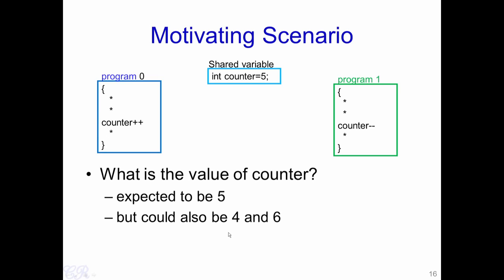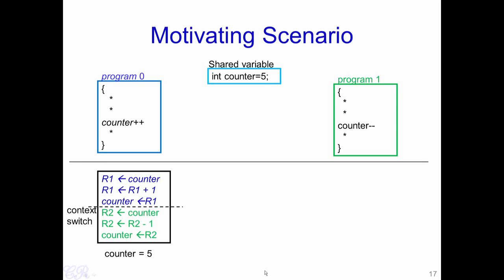But we will now show that we can also obtain values of 4 and 6 for the counter. Let us look more deeply into how these instructions are executing — specifically what happens when we are doing counter++ with respect to the assembly instructions.